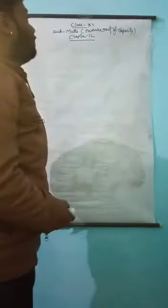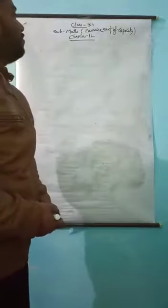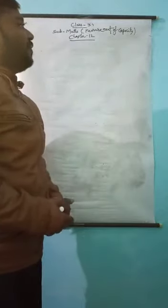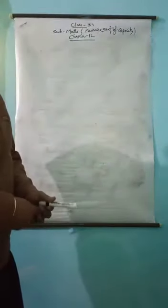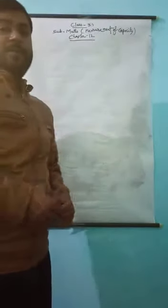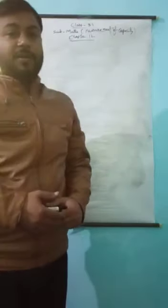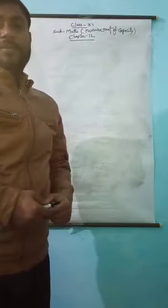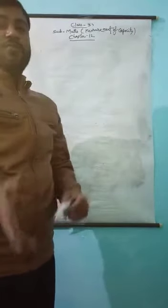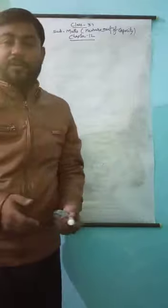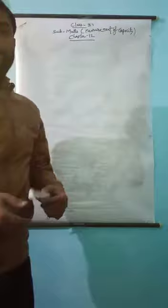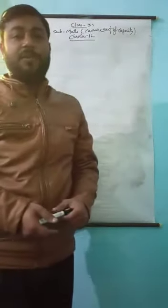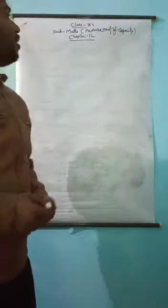Good morning dear students. Class 3, subject Math, Chapter 12. Today our topic is measurement of capacity. In the previous class we learned measurement of weight. We know that one kg is equal to one thousand grams, one gram is equal to one thousand milligrams. To convert a small unit to a bigger unit, one gram is equal to one upon one thousand kilogram, and one milligram is equal to one upon one thousand gram.